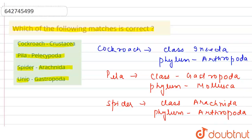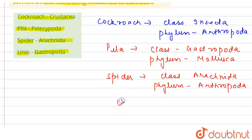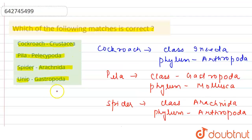Now last we have the Unio. If we talk about the Unio, it has the class which is Pelecypoda and it has the phylum Mollusca, so it belongs to the phylum Mollusca.